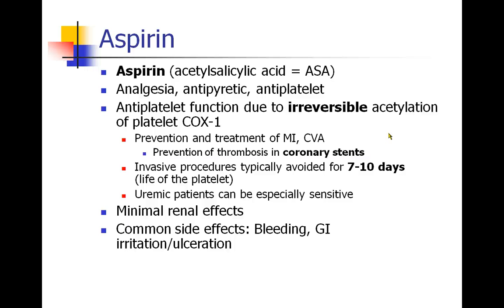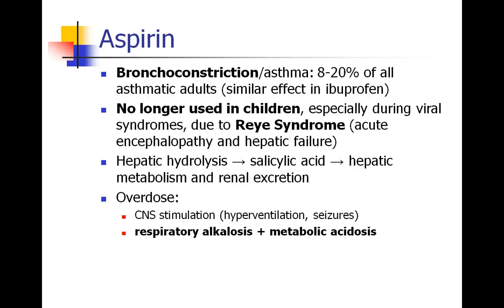Aspirin doesn't have too much renal effect, and the most common side effects are bleeding and GI upset. Some side effects of aspirin include bronchoconstriction or asthma — between 8 and 20% of asthmatic adults may experience bronchoconstriction when given aspirin. Aspirin is no longer used in children, especially if they're having a viral syndrome, because of Reye syndrome — an acute encephalopathy and hepatic failure that can occur when children with a viral syndrome are given aspirin.